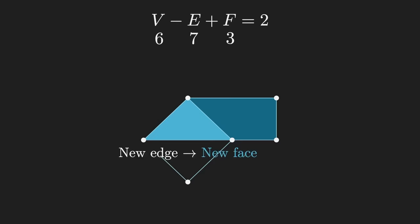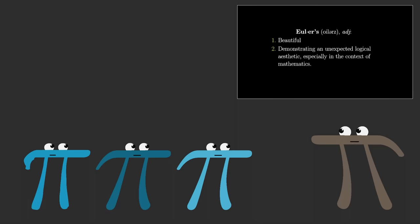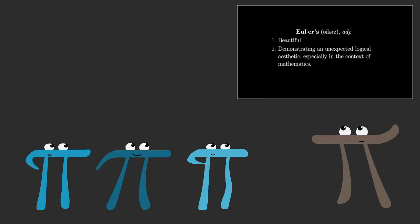So as you build up some potentially complicated graph, V minus E plus F always stays fixed at 2. This equation has a name, it's called Euler's Characteristic Formula, and I remember when I made a video about this a while ago, I had some dumb joke in there about Eulers being German for beautiful, and there were a decent number of comments that were like, you know, Euler is actually a person. I speak German, and it doesn't mean beautiful.